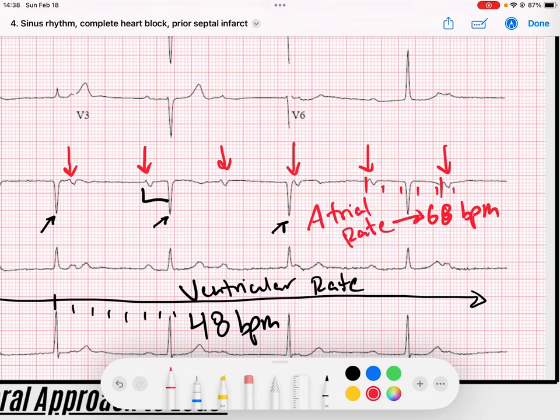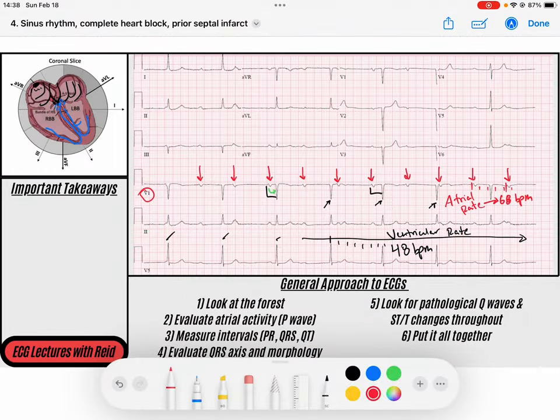So I might have a normal atrial rate. I've got a normal ventricular rate that's regular, but my ventricular rate's slower than the atrial rate, and there is no correlation between the P waves, which are my atrial waves, and my QRSs, which are my ventricular waves. So because of that, that is diagnostic of a third-degree complete AV block.